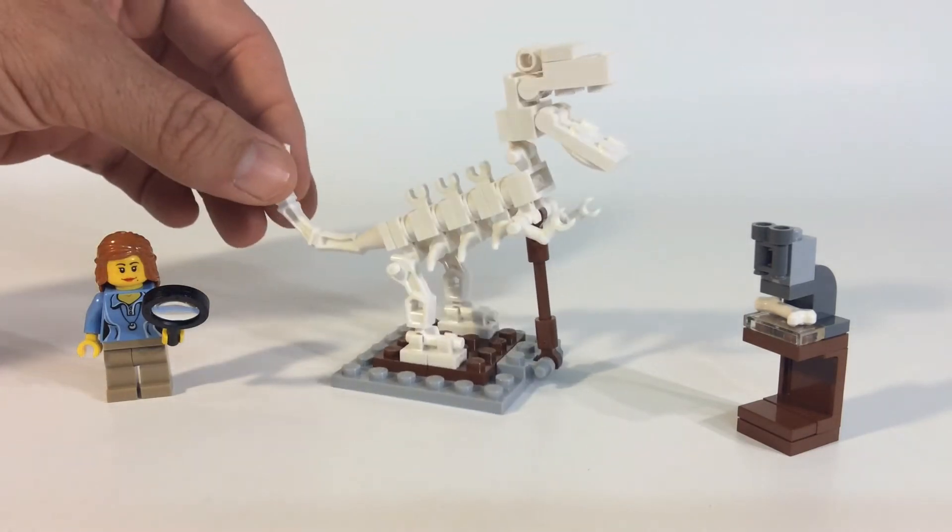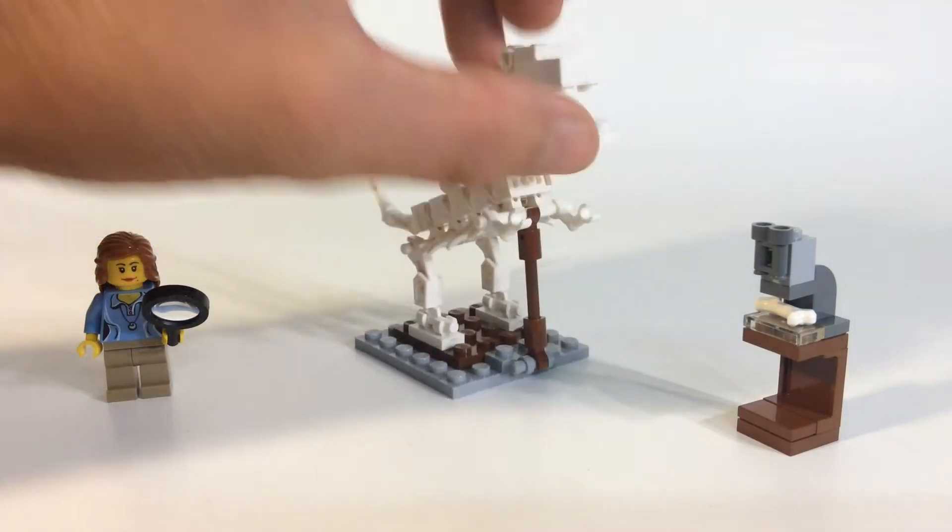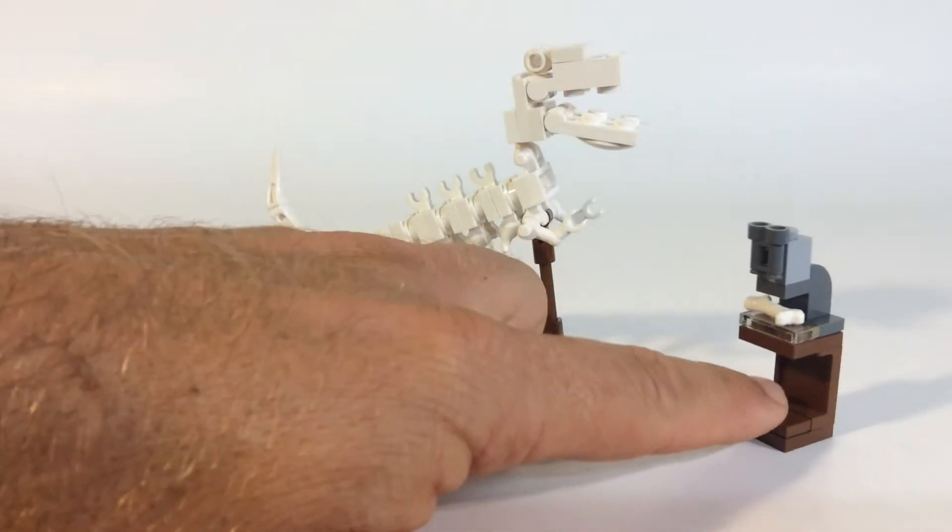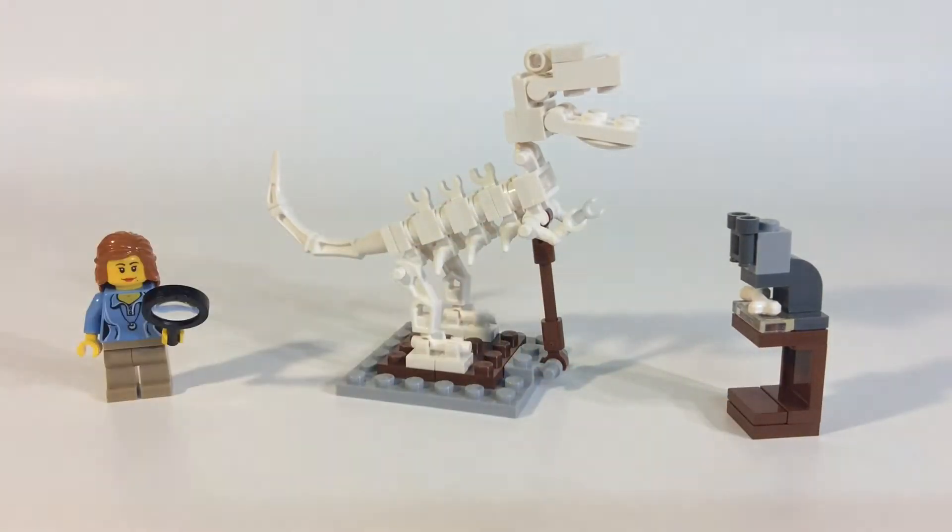I really do like the way this dinosaur is built. It's a solid build, it's not flimsy in any way, shape or form. I really do think it looks like a T-Rex bones. I like the way they did the studs up, studs down to get the mouth and teeth effect. We also do have a microscope here with one bone on it, so I think that turned out pretty nice.